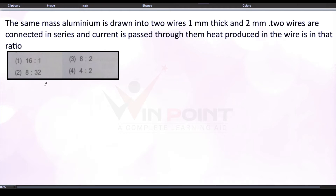Here we have the same mass of aluminum. There are two aluminum wires of same mass — one having thickness 1 millimeter and one having thickness 2 millimeter. If the mass is same, we can say that the volume of these two will be equal: V1 equal to V2, because volume equals mass divided by density. Since both are aluminum, there is no change in density, so volume will be equal: V1 equal to V2.